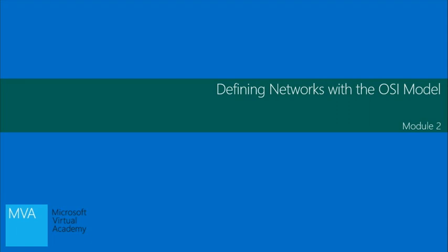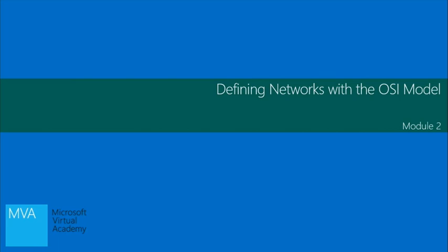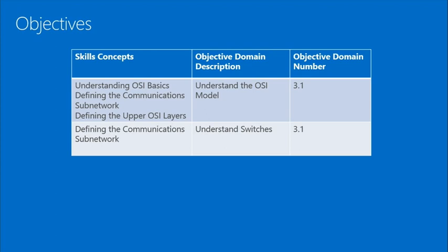We're going to dive right into module two. We're going to start talking about the OSI model today. Module two: defining networks with the OSI model. The skills and concepts here are understanding OSI basics, defining the communication subnetwork, and defining the upper OSI layers.